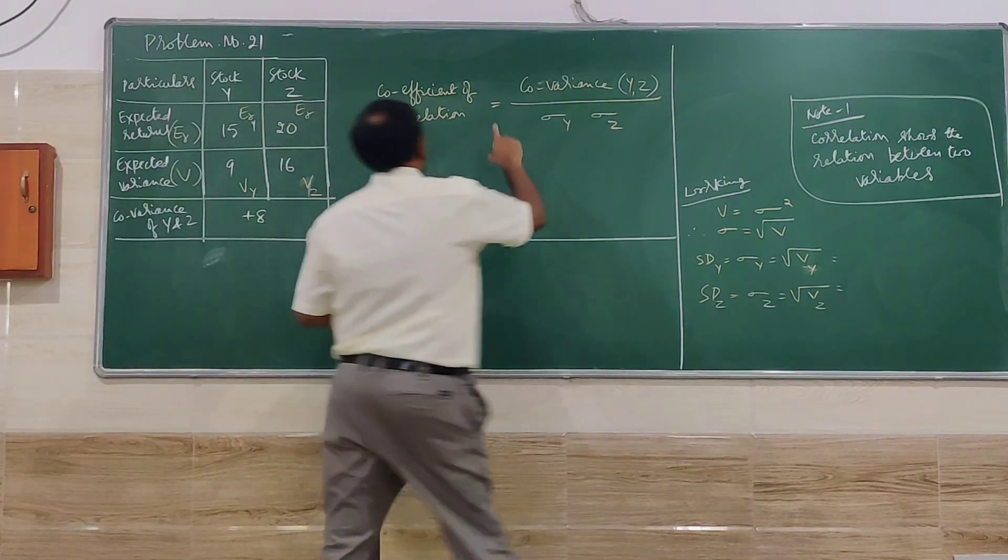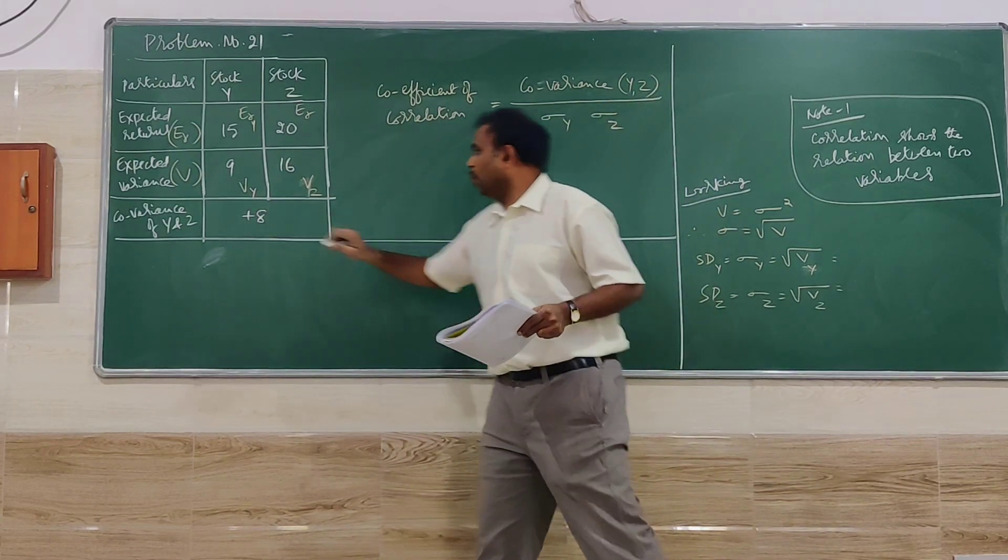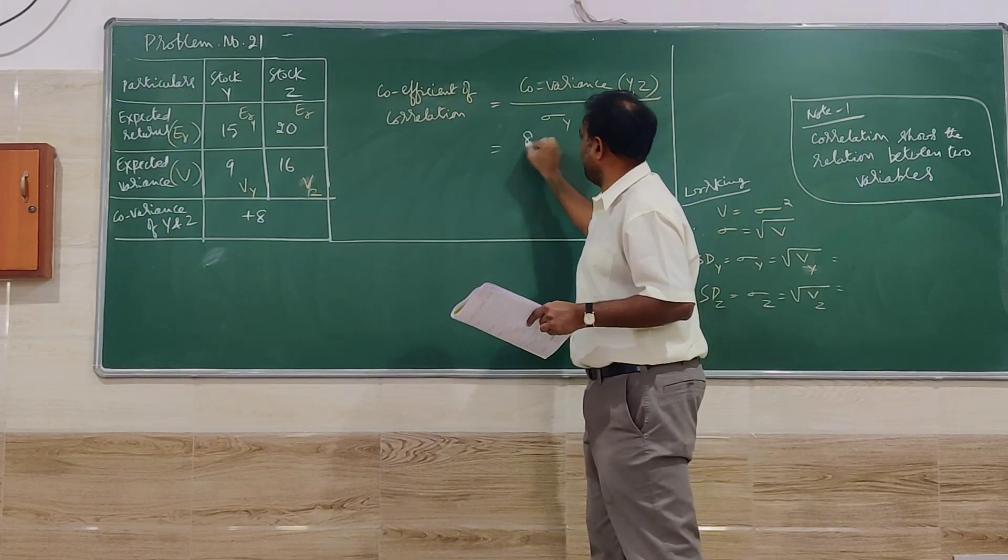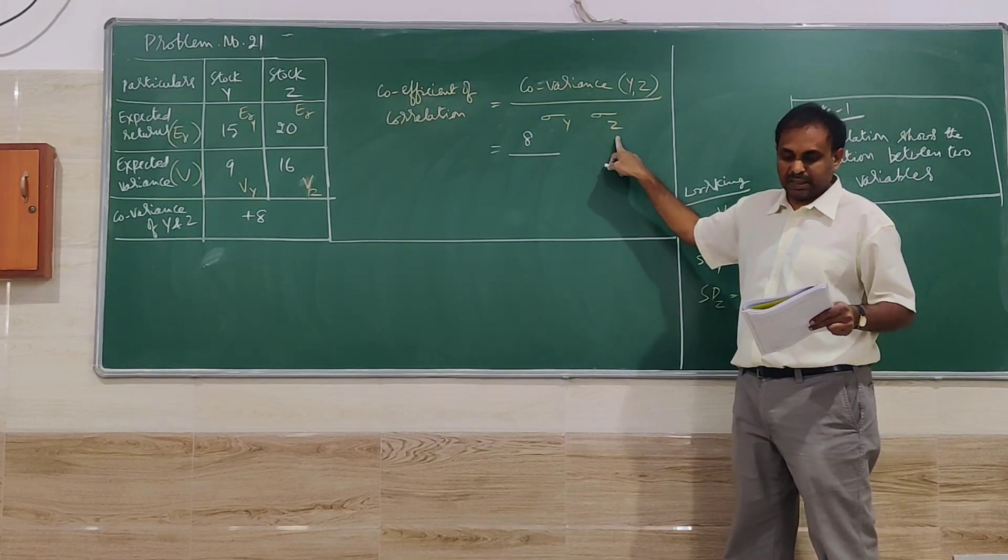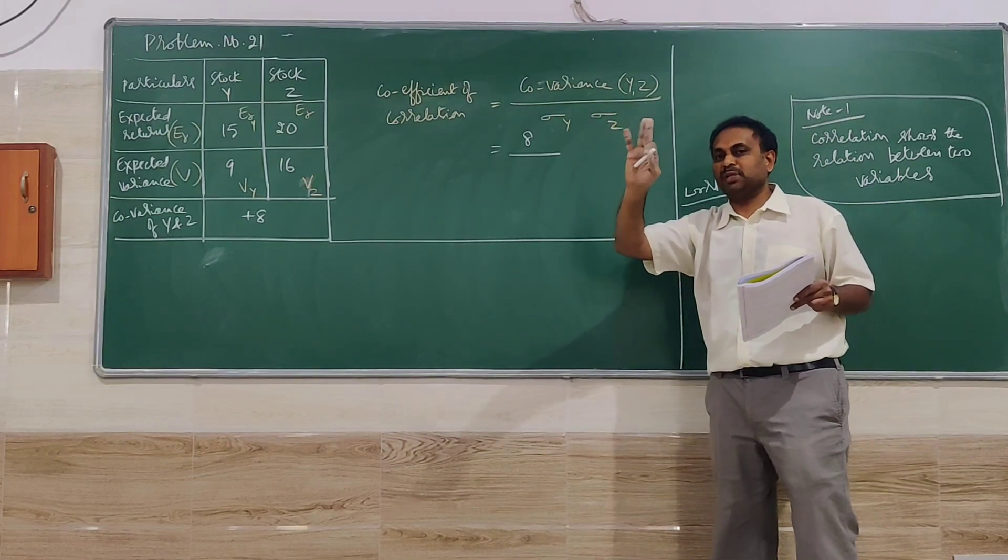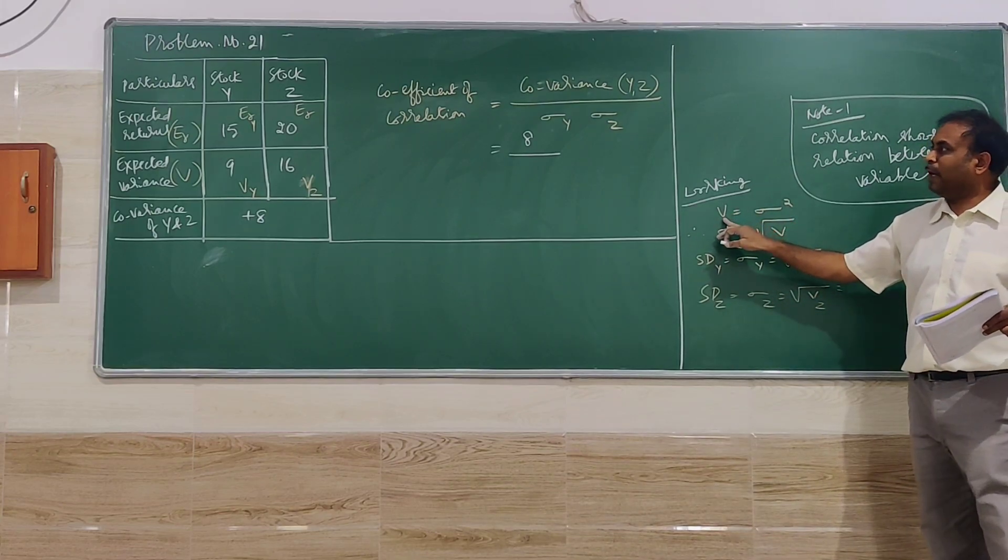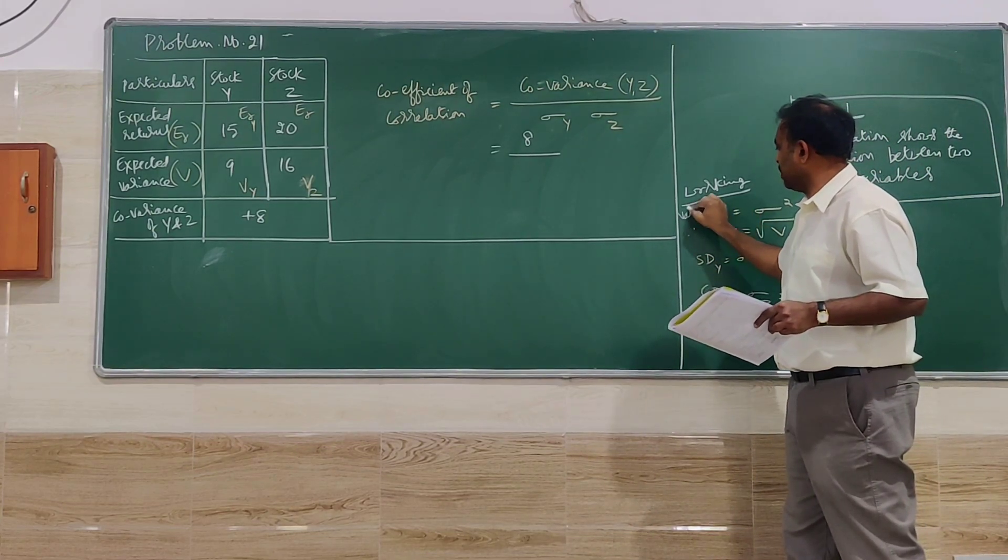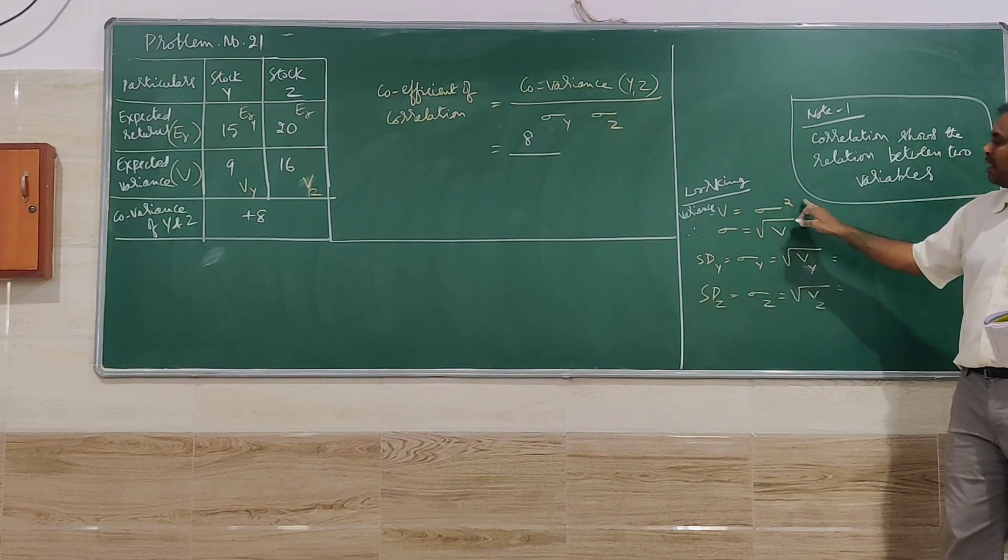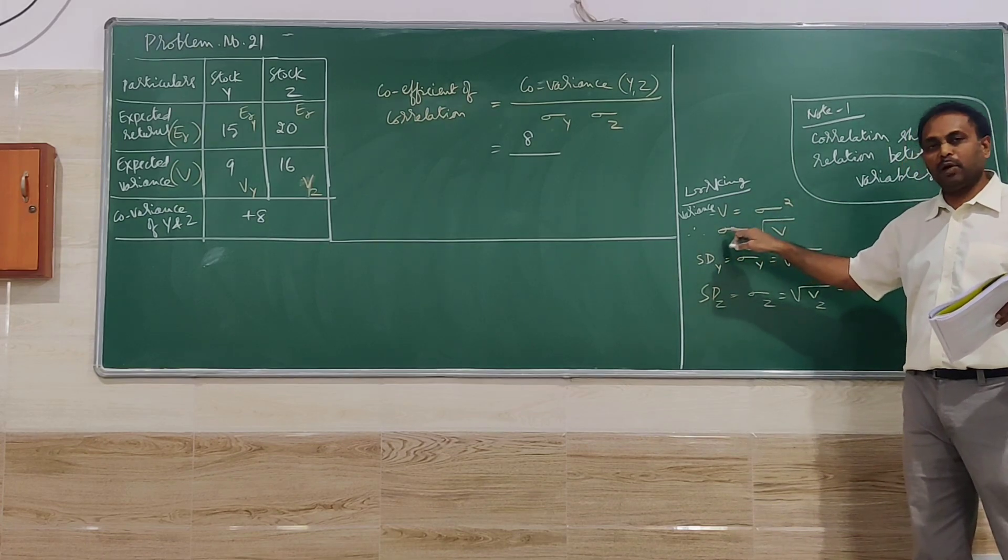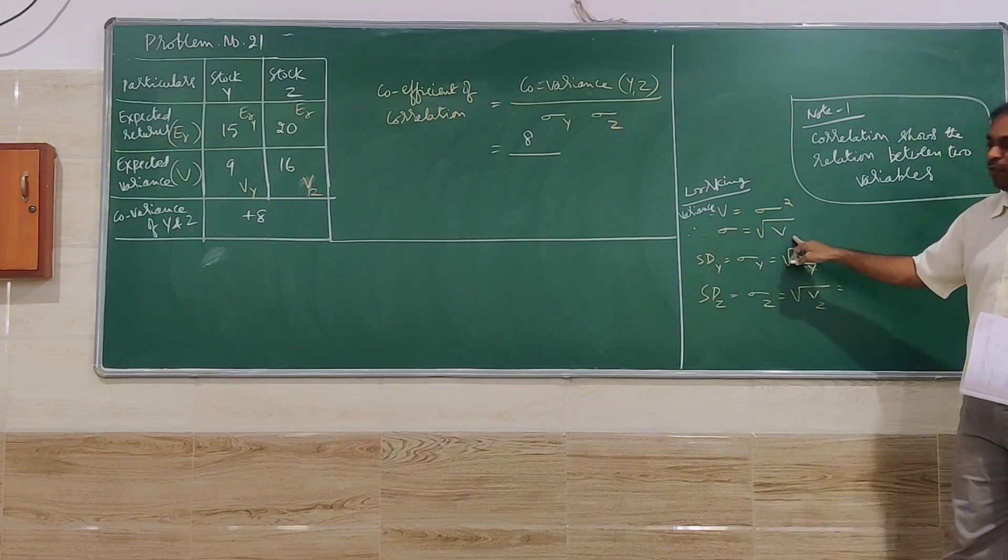So let me go for the coefficient correlation calculation here. Covariance of Y and Z is given as 8, but we need here standard deviation of Y, standard deviation of Z. But we don't have in the problem straight away the value of the standard deviation, but we have value of variance. Variance is given. So variance is equal to the standard deviation squared. If I simplify that, because we need standard deviation, standard deviation is equal to square root of V.